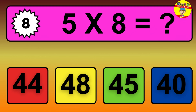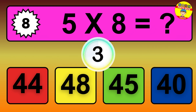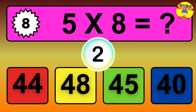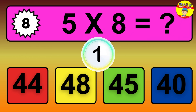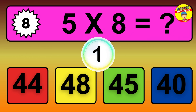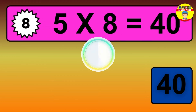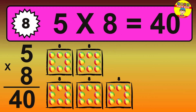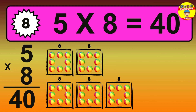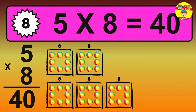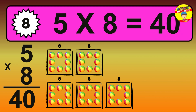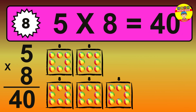Question 8. 5 times 8 equals what? The answer is 5 times 8 is 40. To calculate, we have 5 groups with 8 balls each. So how many balls do we have? 40 balls.